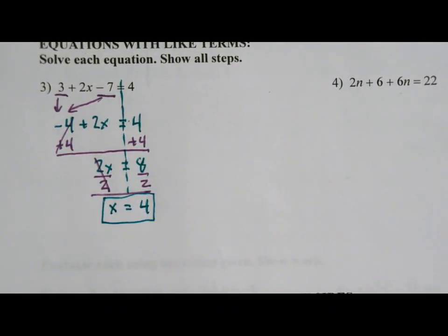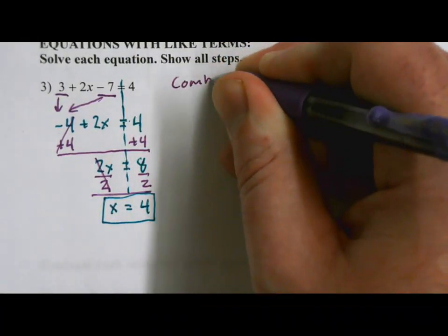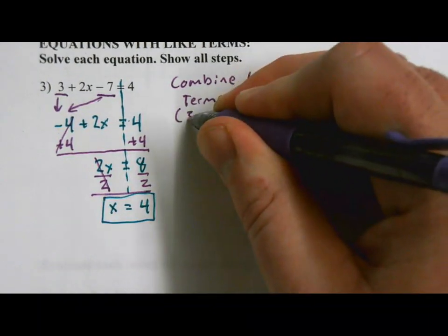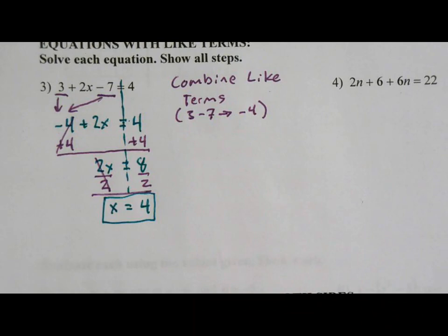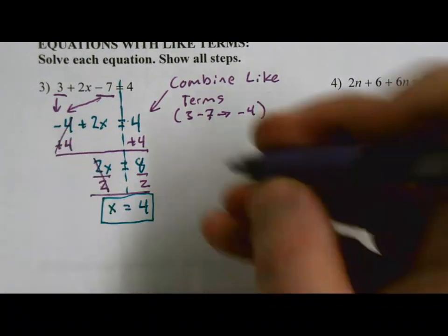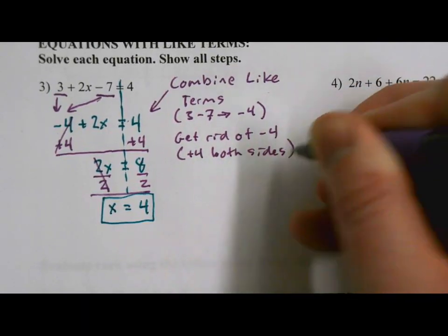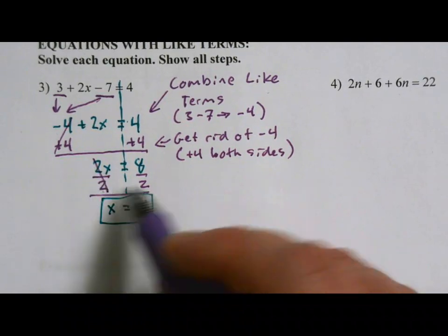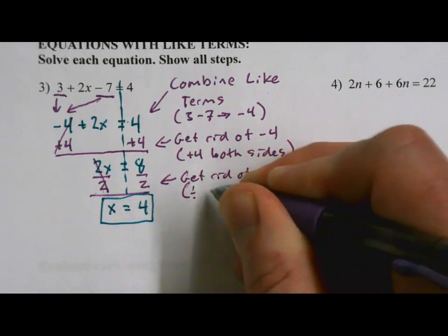Let's go ahead and annotate our problem. So what do we do in our first step here? Well, this first step is where we combine this 3 and this negative 7 together. So we combined like terms. I'm going to make a note to how I did that. I did 3 minus 7 and that gave me negative 4. Alright, that got me to right there. What did I do in my next step? We added 4 on both sides and our reason was we were trying to get rid of this negative 4. So get rid of negative 4 and we did that by doing plus 4 on both sides. In our final step, we got rid of this 2 that was in front of the x. We did that by dividing by 2 on both sides. So we got rid of the 2, dividing by 2 on both sides.